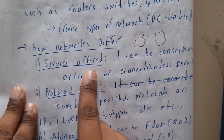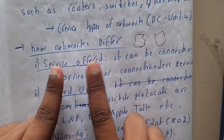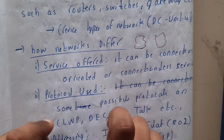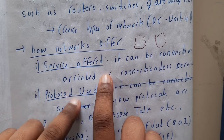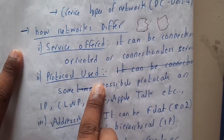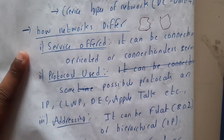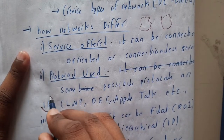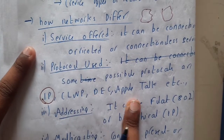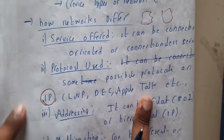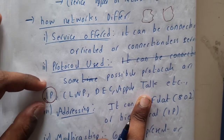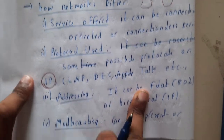There are majorly two types of services: connection-oriented and connectionless. There are multiple protocols, among which one of the most popular is IP. Others include CLNP, DEC, AppleTalk, and more. In this series we are going to discuss the IP header and how the IP protocol works.